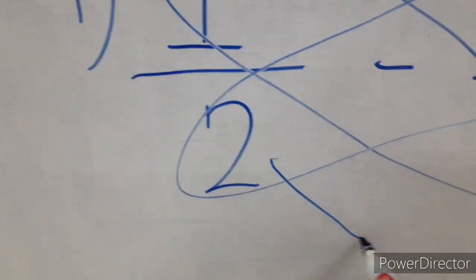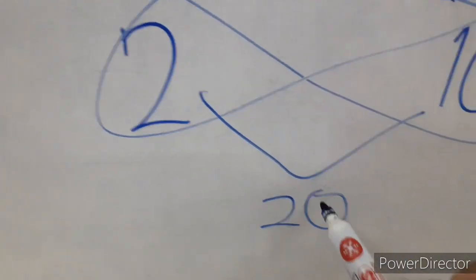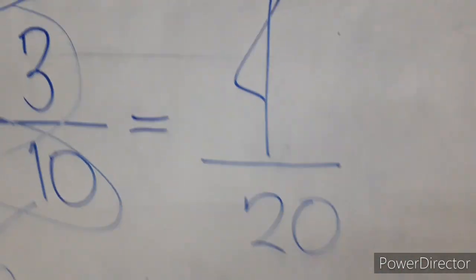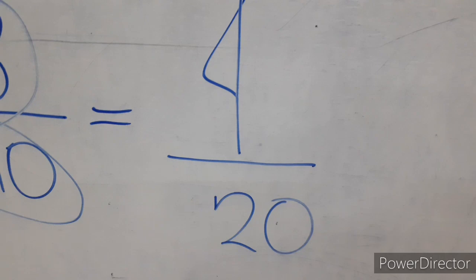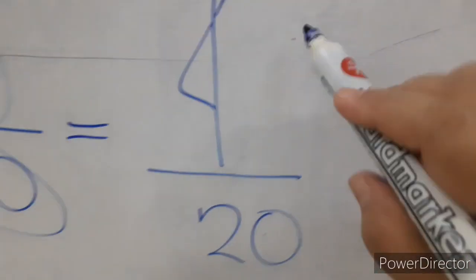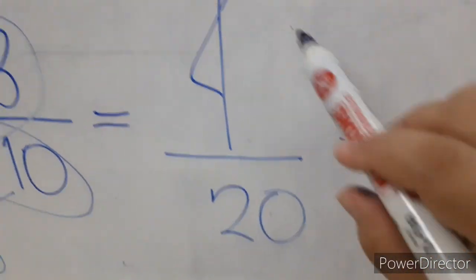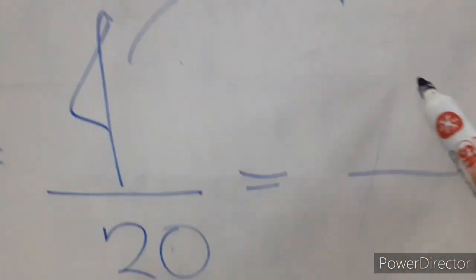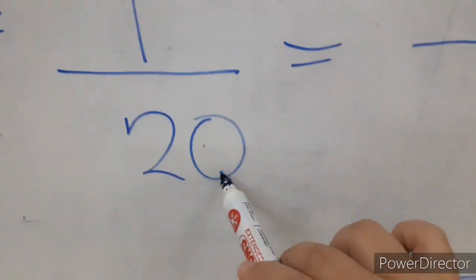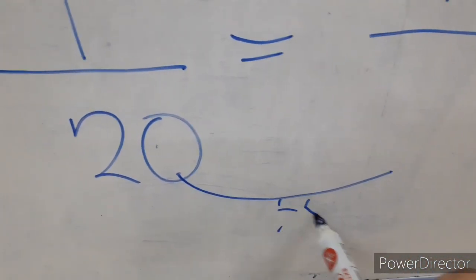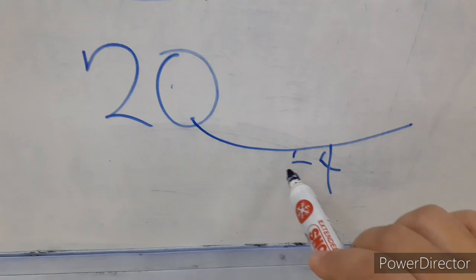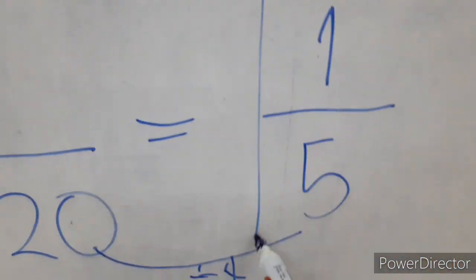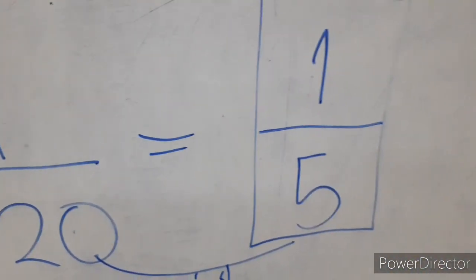And our denominator is 2 times 10, which is 20. So this is now 4 over 20. We know that 4 and 20 have a common factor — both are divisible by 4. So let us divide both by 4. 4 divided by 4 is 1, and 20 divided by 4 is 5. So our final answer is 1 over 5. Thank you.